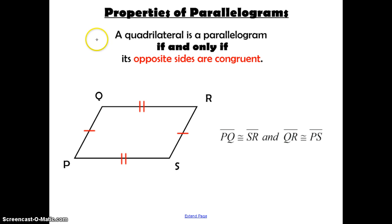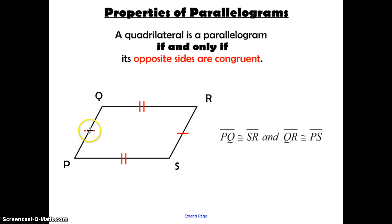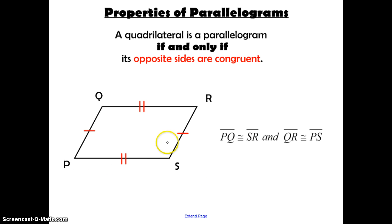The first property states: a quadrilateral is a parallelogram if and only if its opposite sides are congruent. So opposite sides PQ and RS are congruent, and opposite sides QR and PS are congruent. We can either state that as true about the parallelogram, or use it to prove something is a parallelogram.